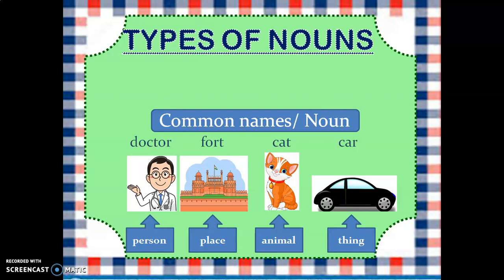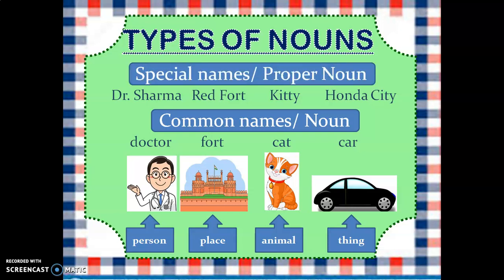Now if we are giving a specific name to this doctor, a name to this food, a name to this cat, and a name to this car — maybe we call this doctor Dr. Sharma, the food could be called Red Fort, we give the cat a name like Kitty, and this car we assume is Honda City. So these are special names we have given to these: Dr. Sharma, Kitty, and Honda City. These special names are also known as proper nouns.